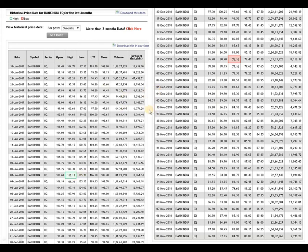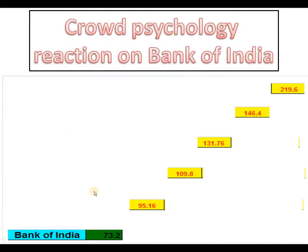We are now studying mob psychology or crowd psychology. Based on volume and deliverable volume, assuming Bank of India has taken support around 73.20 rupees, the following levels are indicated: above 95.16 rupees, the script can move up to 110 rupees. Above 110, 131.80 is indicated. Above 131.80, 146.40 is indicated. Above 146.40, 219 rupees is indicated. This study is based on volume traded and deliverable volume on the National Stock Exchange at different points in time.